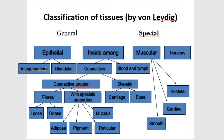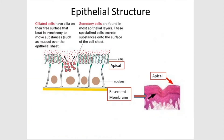Tissues can be classified into general and special types. Special tissues include muscle tissue and nervous tissue. General tissues include epithelial tissue and connective tissue. Epithelial tissues are widespread throughout the body — they form the covering of all body surfaces, line body cavities and hollow organs, and are the major tissue in glands.